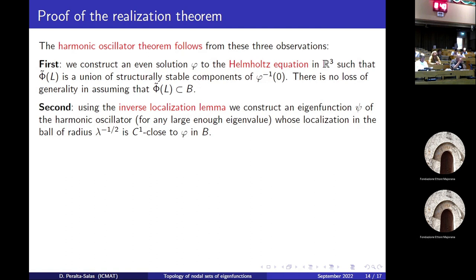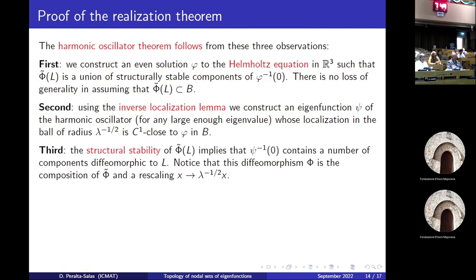Putting together all these results: first, we construct an even solution to the Helmholtz equation in R³ with a nodal set that has a subset which is the given link, and it's structurally stable so it doesn't disappear after perturbation. Second, you have this solution to the Helmholtz equation which lives everywhere in R³. Now, we use the inverse localization lemma — take this Helmholtz solution on the unit ball, then shrink that ball to be very tiny (probably you don't observe this in numerical experiments), and insert it as a solution to the quantum harmonic oscillator for a very large eigenvalue. You will get a solution not for the Helmholtz equation but for the harmonic oscillator, paying the price of the smallness of the link and the presence of typically many other components, most of which are probably very large.